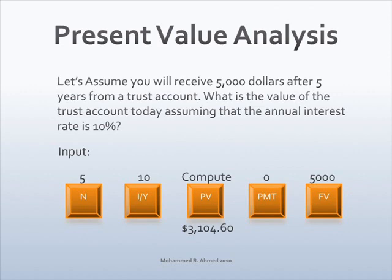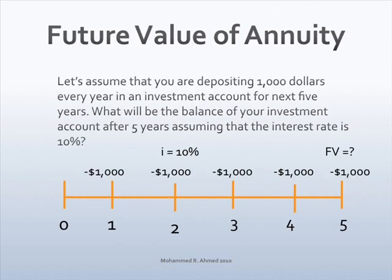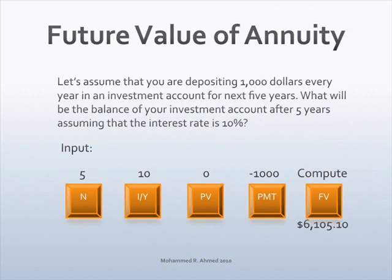This is the present value of $5,000 that you will receive after five years in today's dollars. Now assume you are depositing $1,000 every year in an investment account for the next five years. What will be the balance after five years, assuming the interest rate is 10%? Draw the timeline: time period is five years, $1,000 every year is the payment, interest rate is 10%, question mark on the right-hand side — it is a future value of annuity analysis. Enter: 5 N, 10 I/Y, zero present value, $1,000 then plus/minus then payment. Press compute and future value, or just FV for HP. The future value of $1,000 deposits for five years is $6,105.